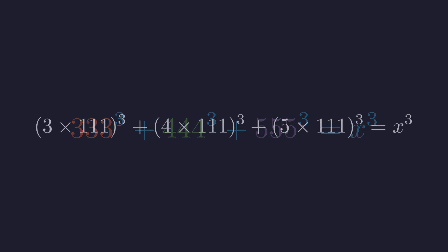So let's make this structure explicit. 333 is just 3 times 111. 444 is 4 times 111. And 555 is 5 times 111. This factorization is going to unlock everything.